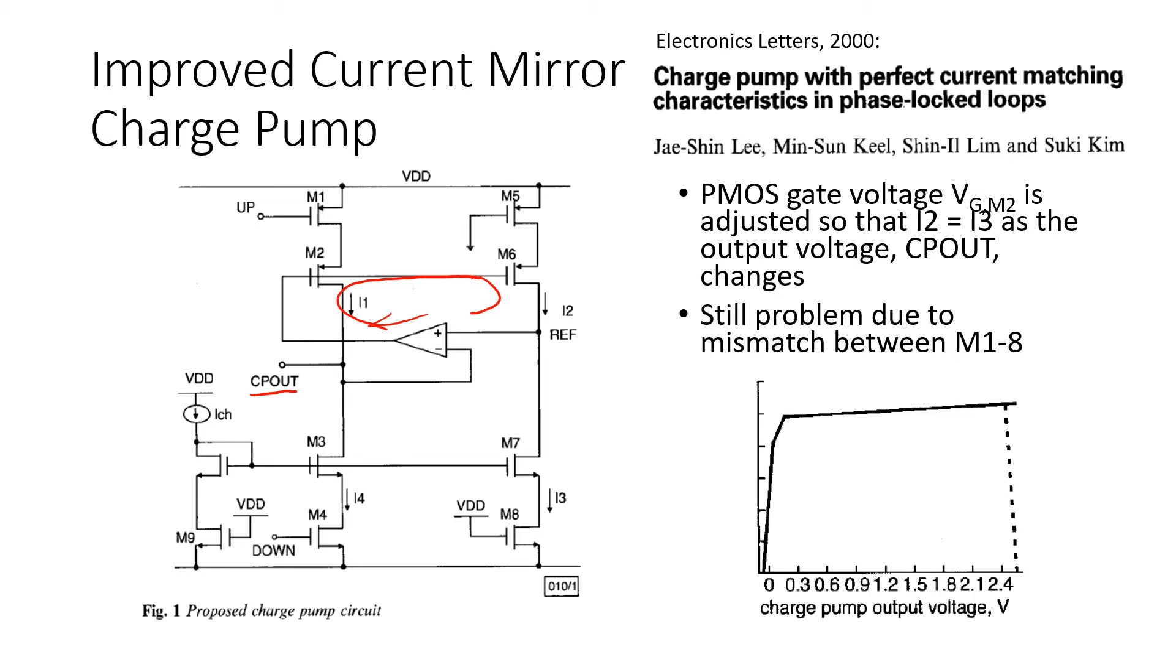And assuming that that feedback loop is compensated so that it's stable, what you end up with is that the voltage at this reference node is equal to the voltage at the output of the charge pump, because if that loop is stable, we expect to see a virtual short circuit between this amplifier's input terminals.